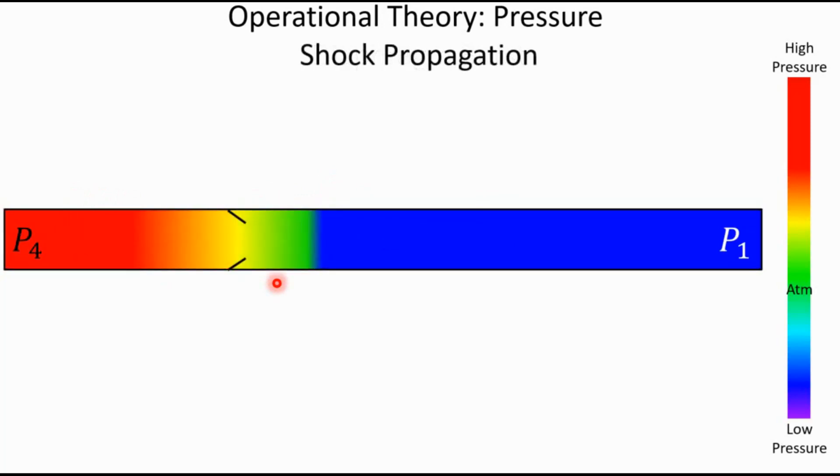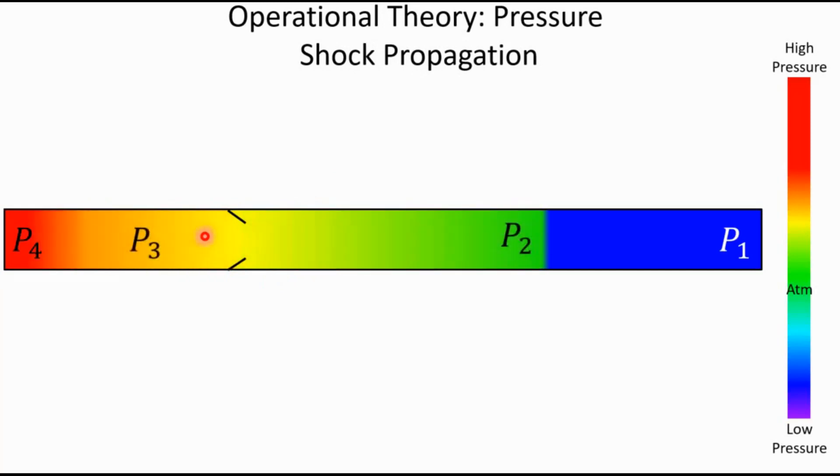So as that shock wave propagates down, the gas that was just shocked has an increase in pressure. And then you can see that this high pressure at P4 is slowly going down due to expansion. So if we follow that a little bit further down, now we have our original driven section pressure is P1. The gas that was just shocked by the incident shock wave is called P2. The gas that is expanding backwards into the driver section is at P3, and then the gas that has still not expanded, that is at its original burst pressure, is called P4. And these states obviously remain for a few microseconds; this is happening very quickly.